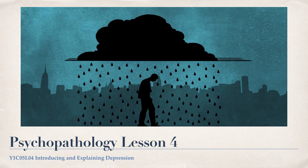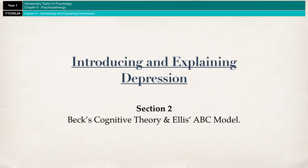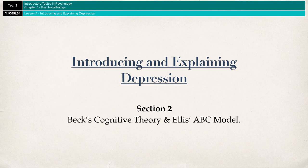Welcome to the second video on depression. Whereas the first video was all about symptoms and characteristics, this video is going to be much more about explaining where depression comes from. We're going to be looking at a cognitive explanation. According to the cognitive approach, emotional problems such as depression are the result of cognitive distortions — essentially irrational thinking. There are two key cognitive theories: Beck's cognitive theory and Ellis' ABC model.